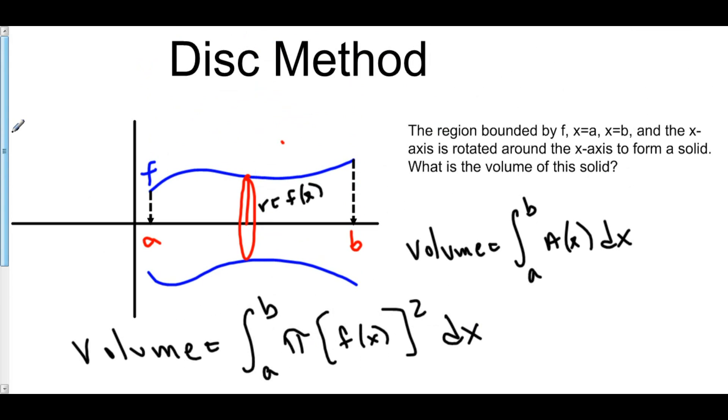Because as we revolve f around the x-axis, the cross-sections are circles, or in other words, they are disks.